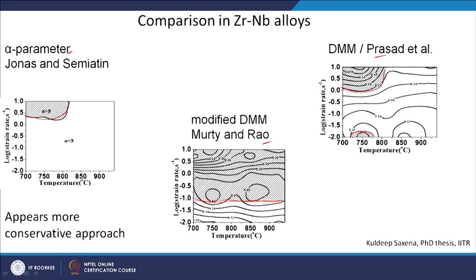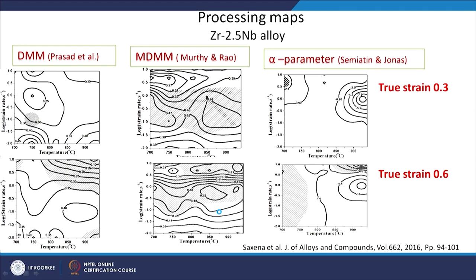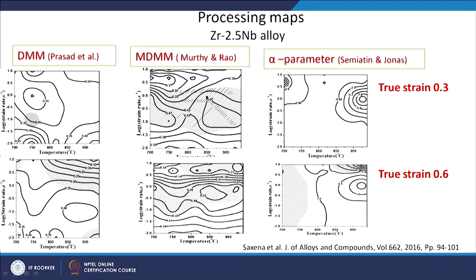In the DMM model, an additional instability region is shown at lower strain rate and also lower temperature. The high efficiency regions are clearly visible in both DMM and modified DMM. These represent different approaches to plotting the processing map. Another comparison is made in Zr-2.5Nb, again comparing the DMM model, modified DMM, and alpha parameter, plotted at two different strains. As you go from strain 0.3 to 0.6, there are changes in instability regions as well as efficiency regions.